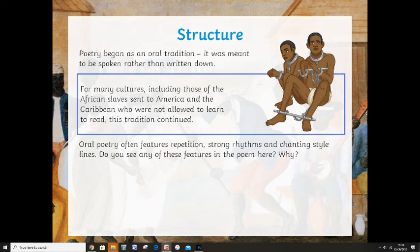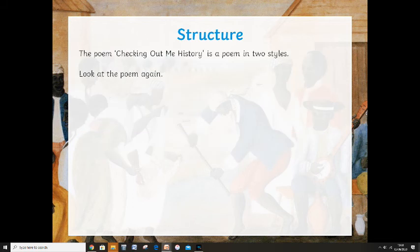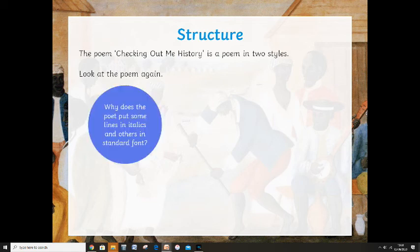For many cultures — including those of the African slaves sent to America and the Caribbean who were not allowed to learn to read — this tradition continued. Oral poetry often features repetition, strong rhythms, and chanting-style lines. Do you see any of those features in this poem? Repetition, strong rhythm, and a chanting style line. Have another look through the poem and see if you can find any of those — and think why, always why, has the poet done this. Now, 'Checking Out Me History' is a poem in two styles.